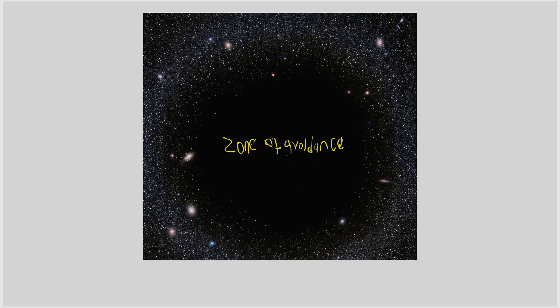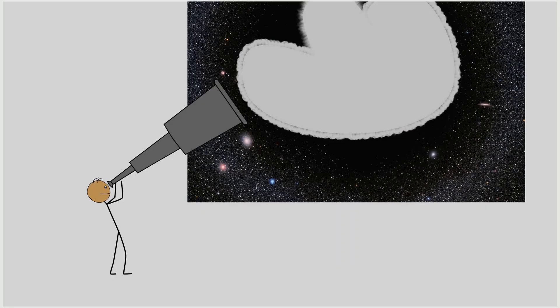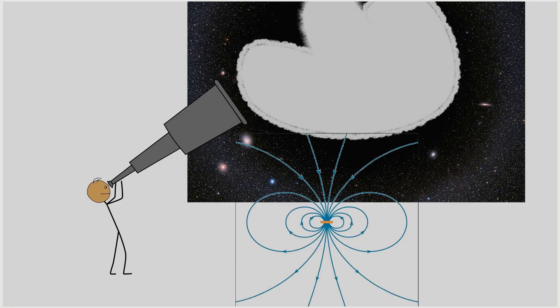Located in the Zone of Avoidance, a region obscured by the plane of the Milky Way's disk, this massive structure cannot be seen in visible light. Instead, it is detected through its gravitational influence on galactic motion.